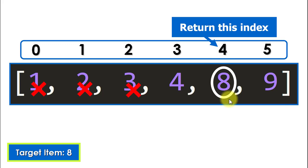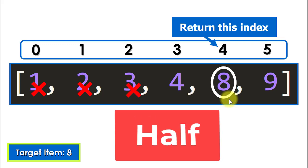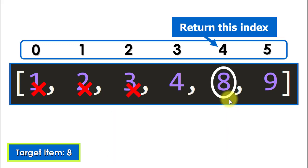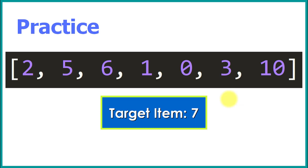We return this index — the index where that element is located in the sequence. That is basically how the binary search algorithm works: it divides the search space in half, checks the middle element in the interval, and discards half the list on each iteration until it finds the element. If the element is not found, minus one is returned.